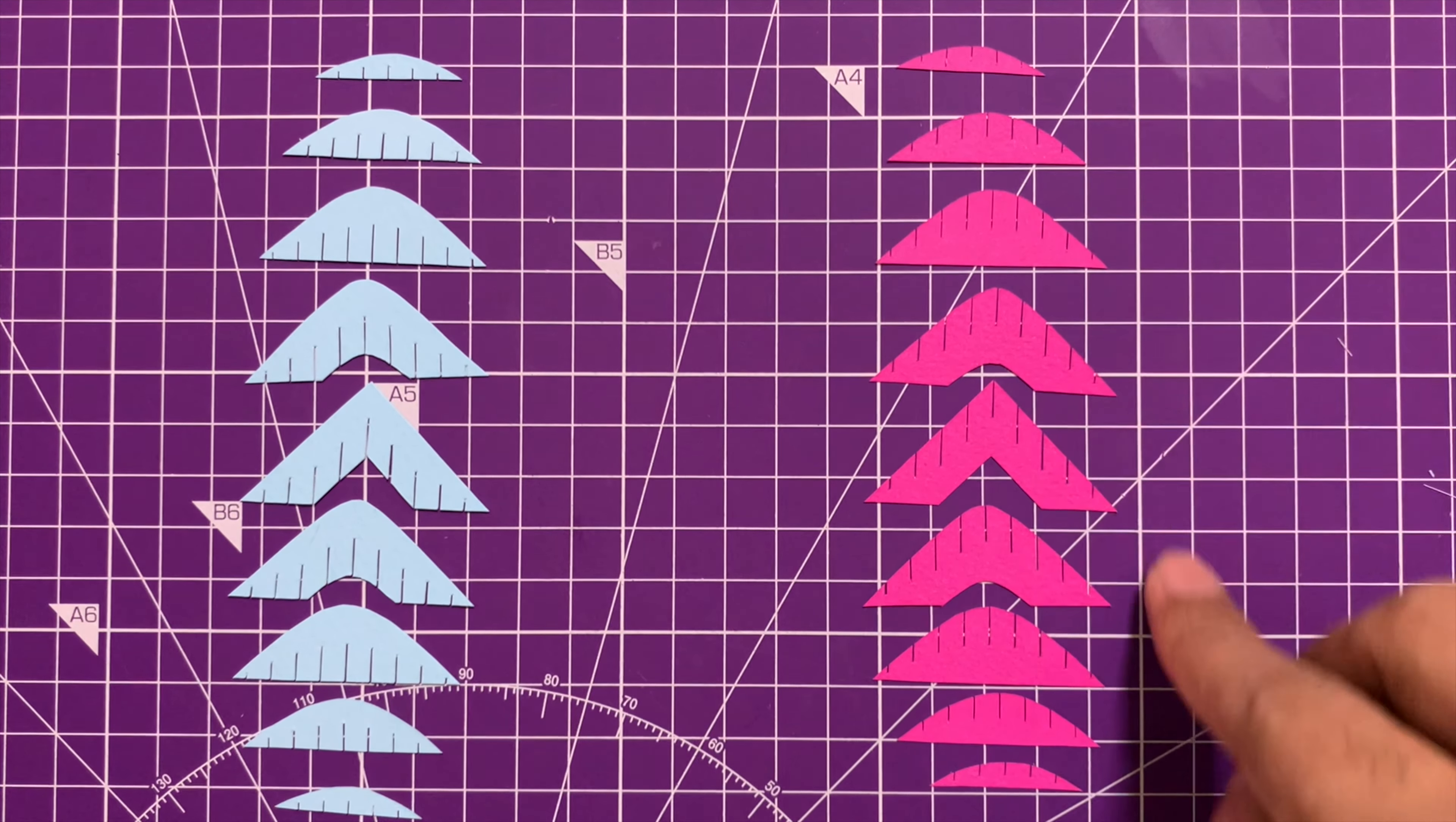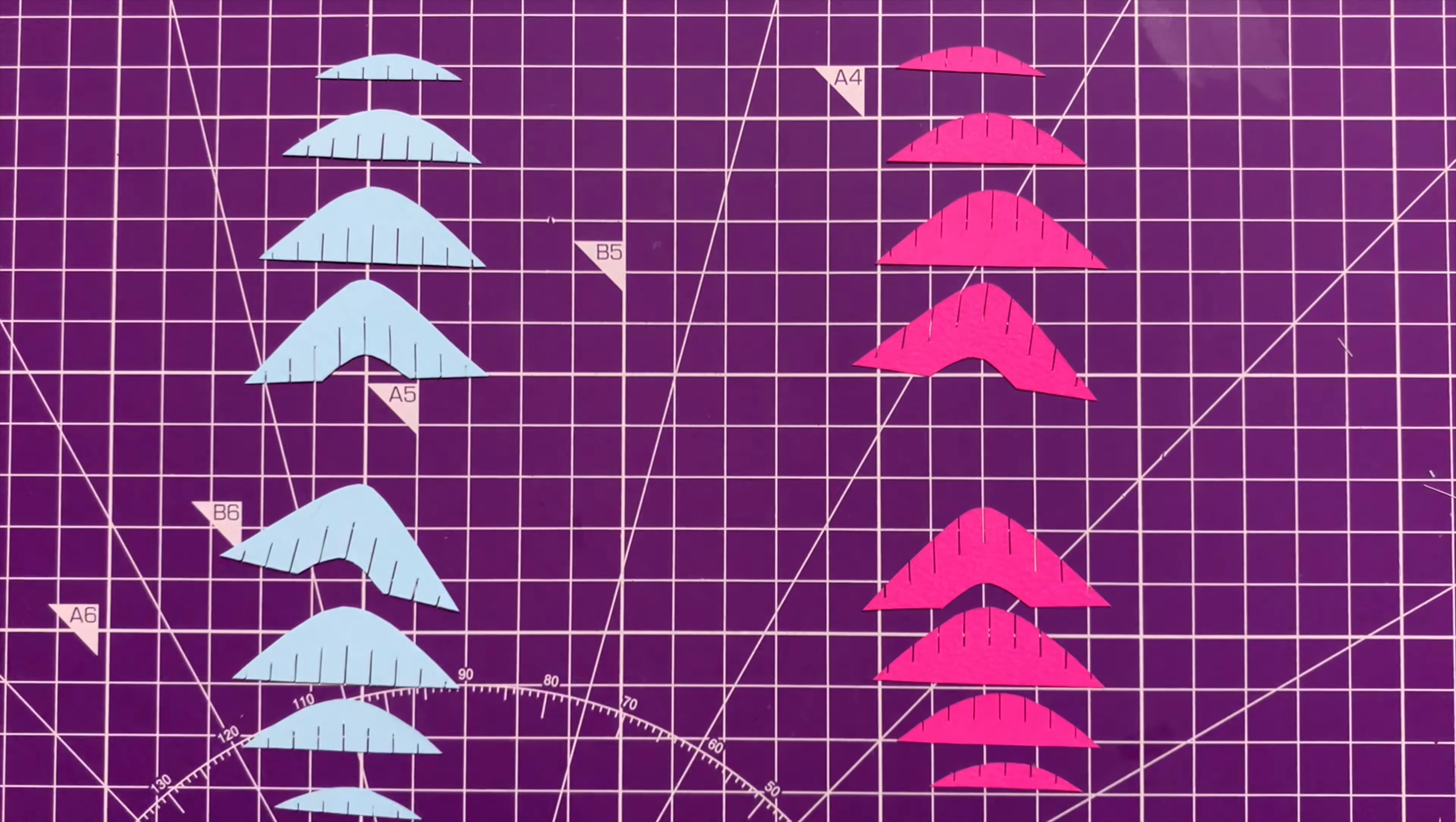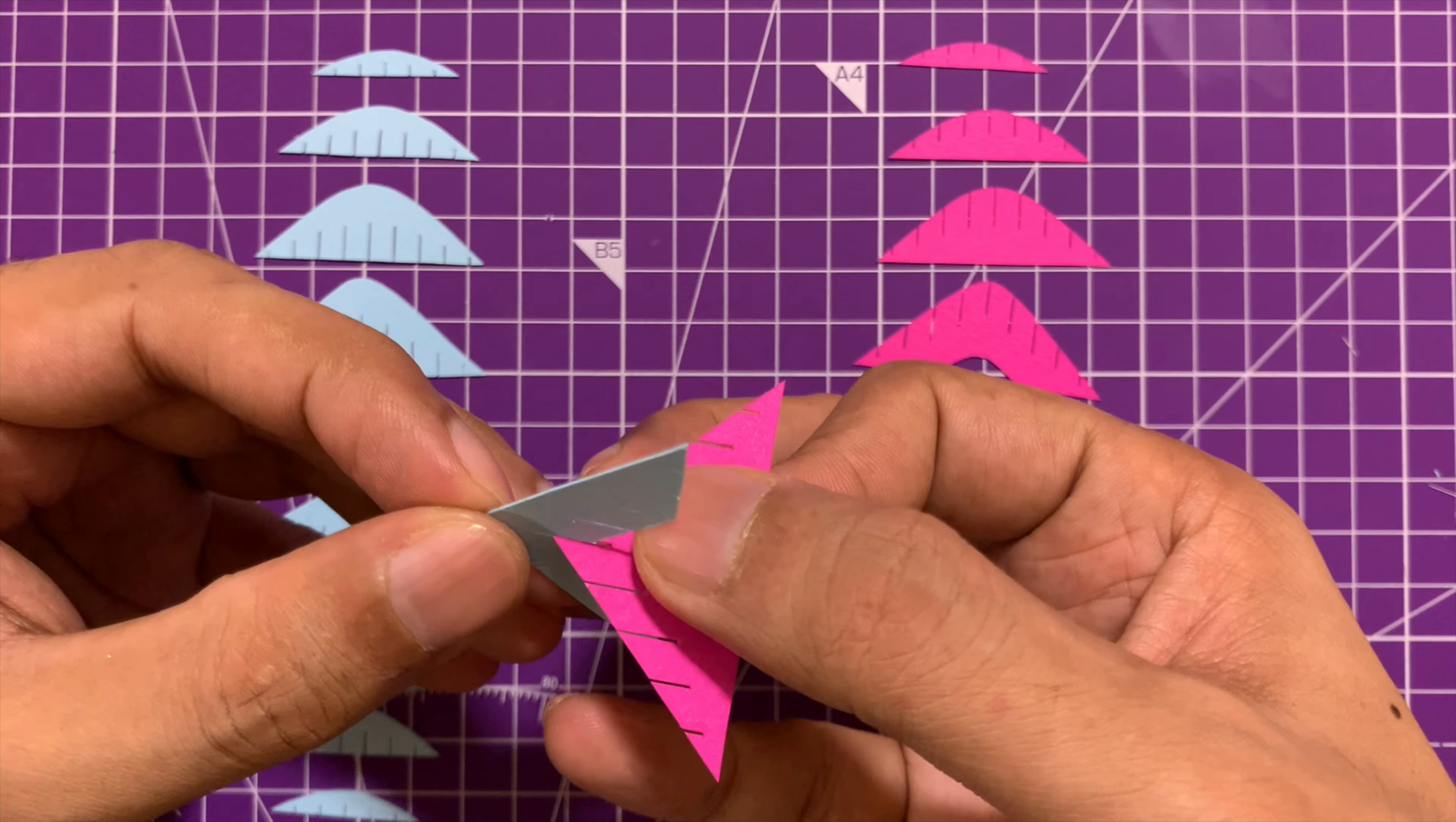Alright so I have cut all the pieces and here they are. I have put them side by side. The construction of any slice form art always starts with the center most pieces of both the planes. Normally they will be the biggest pieces but in some cases they can be the smaller pieces also. Do not start with the edges. Always start with the center.